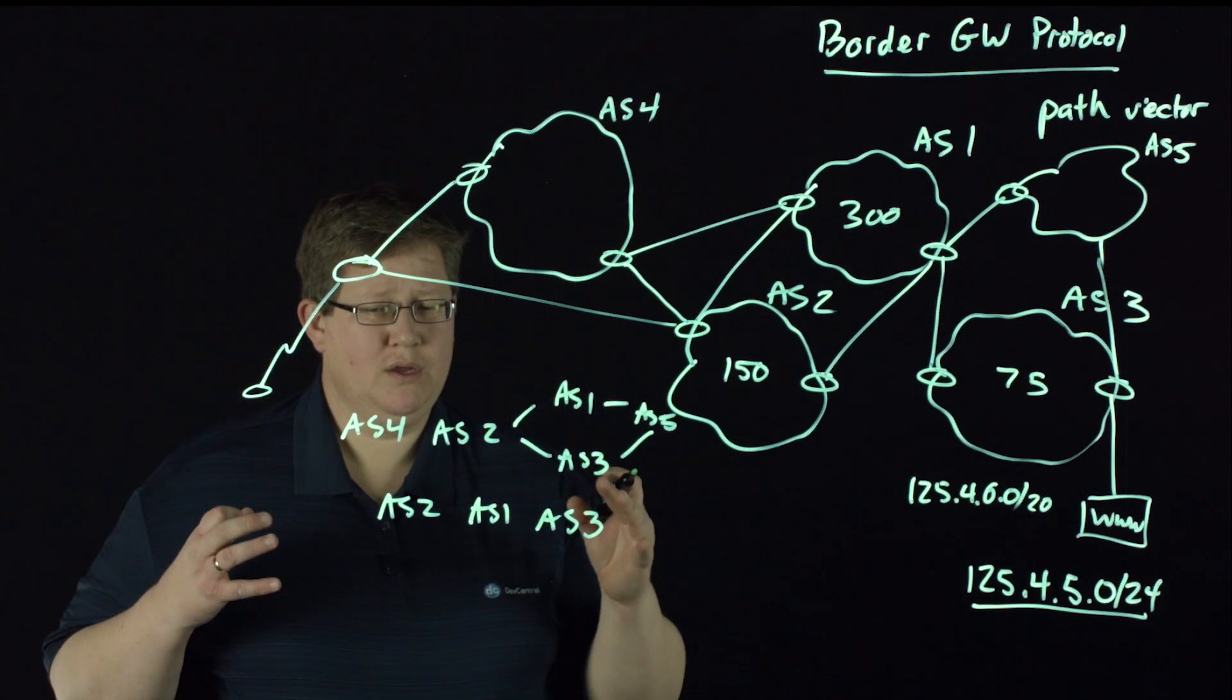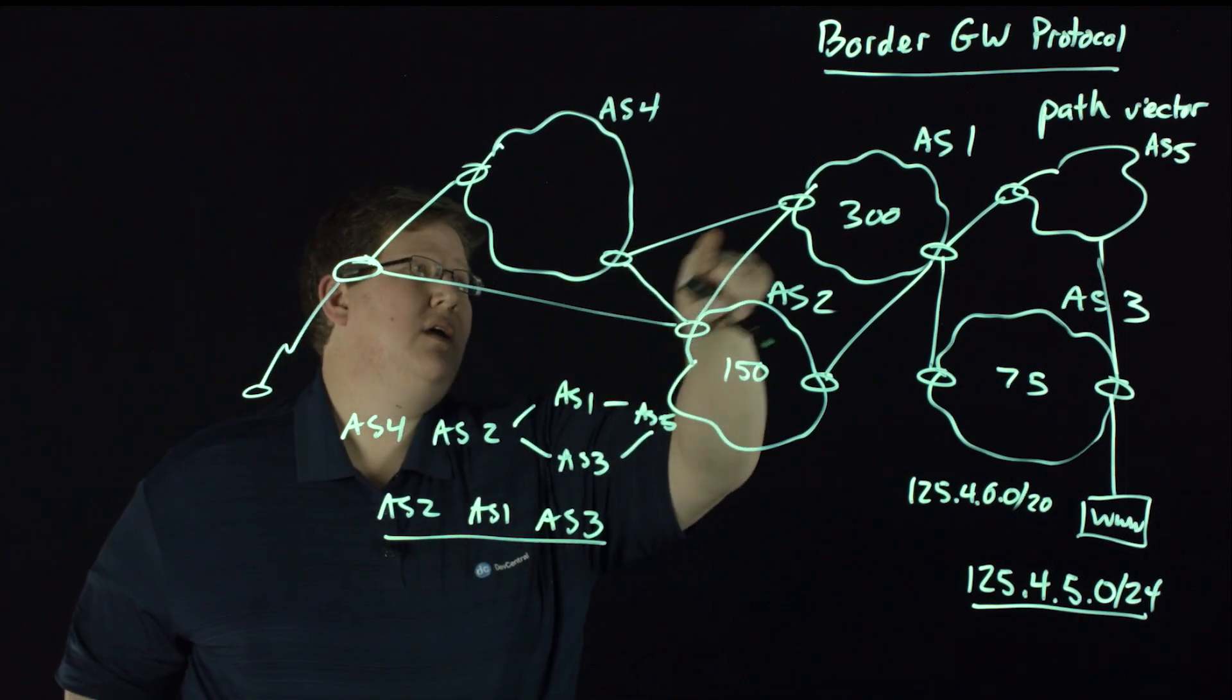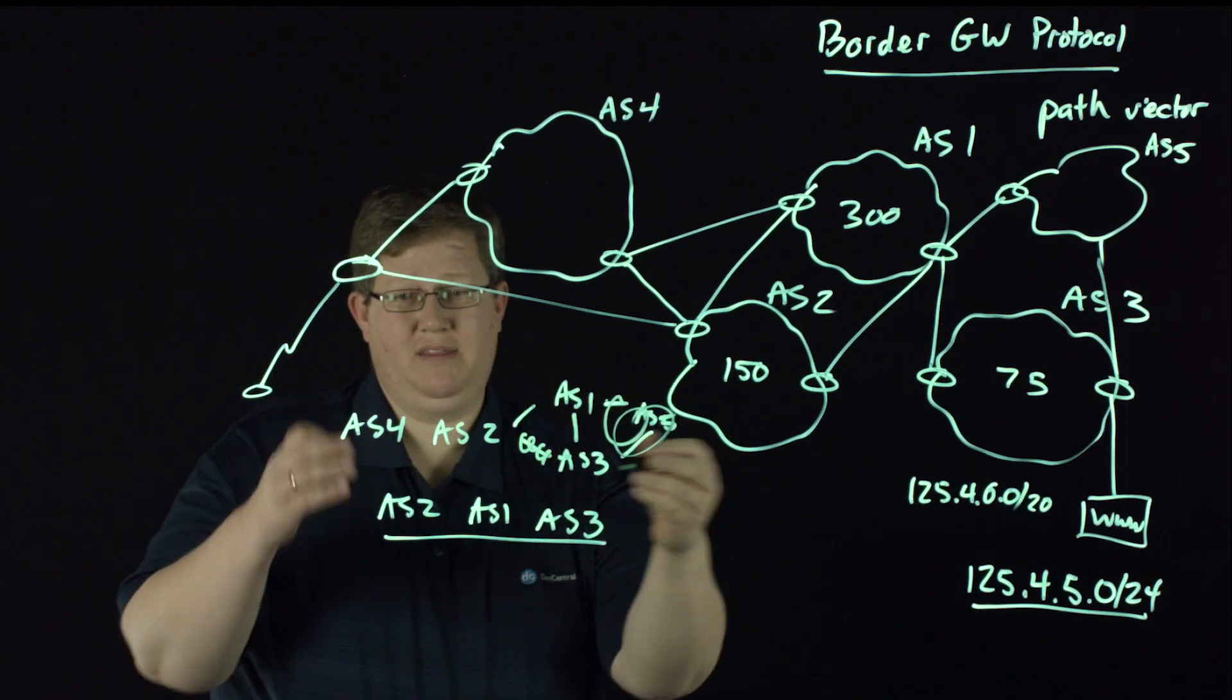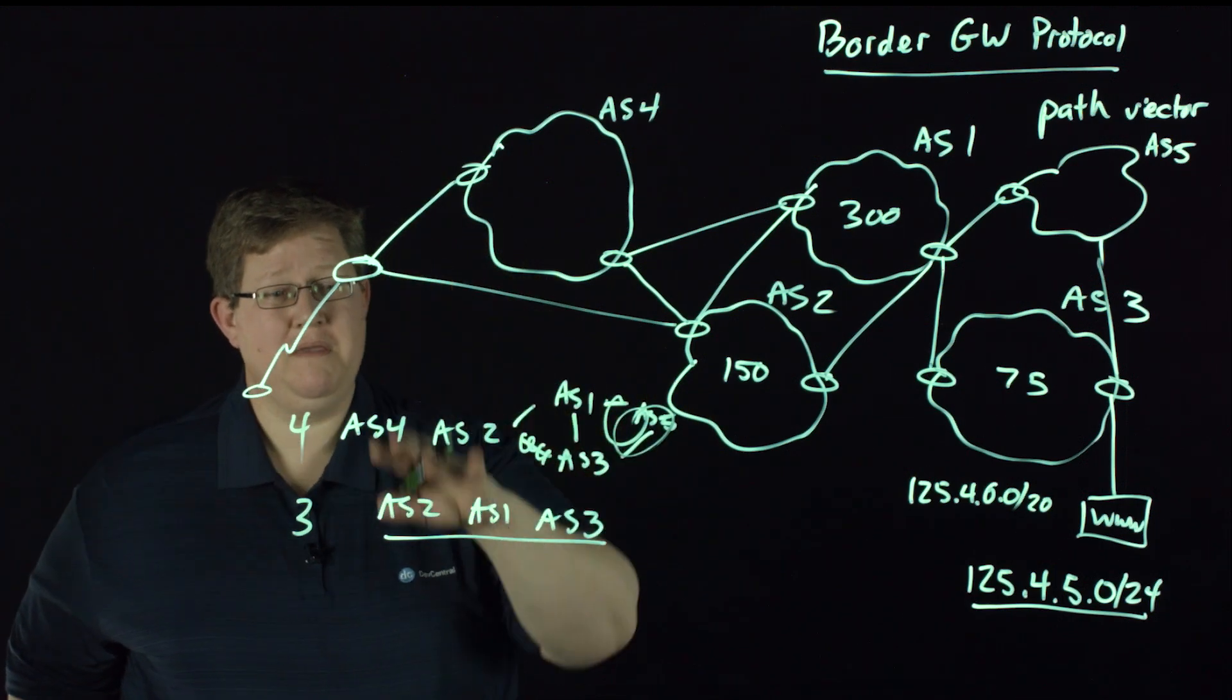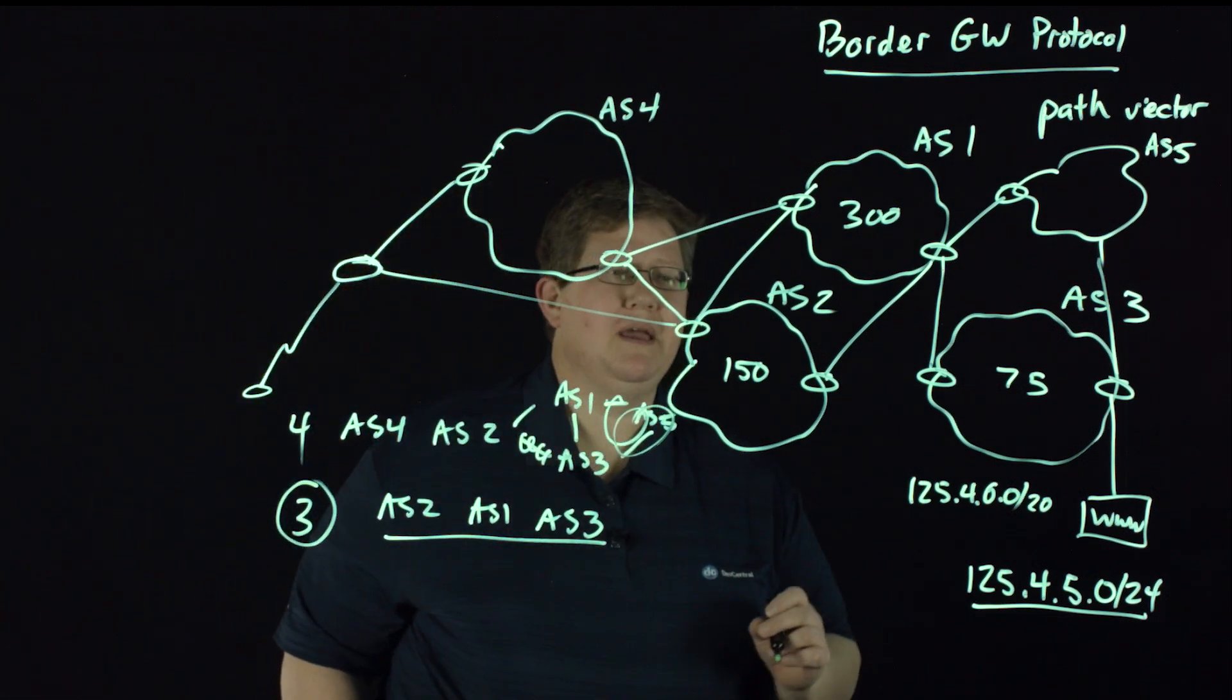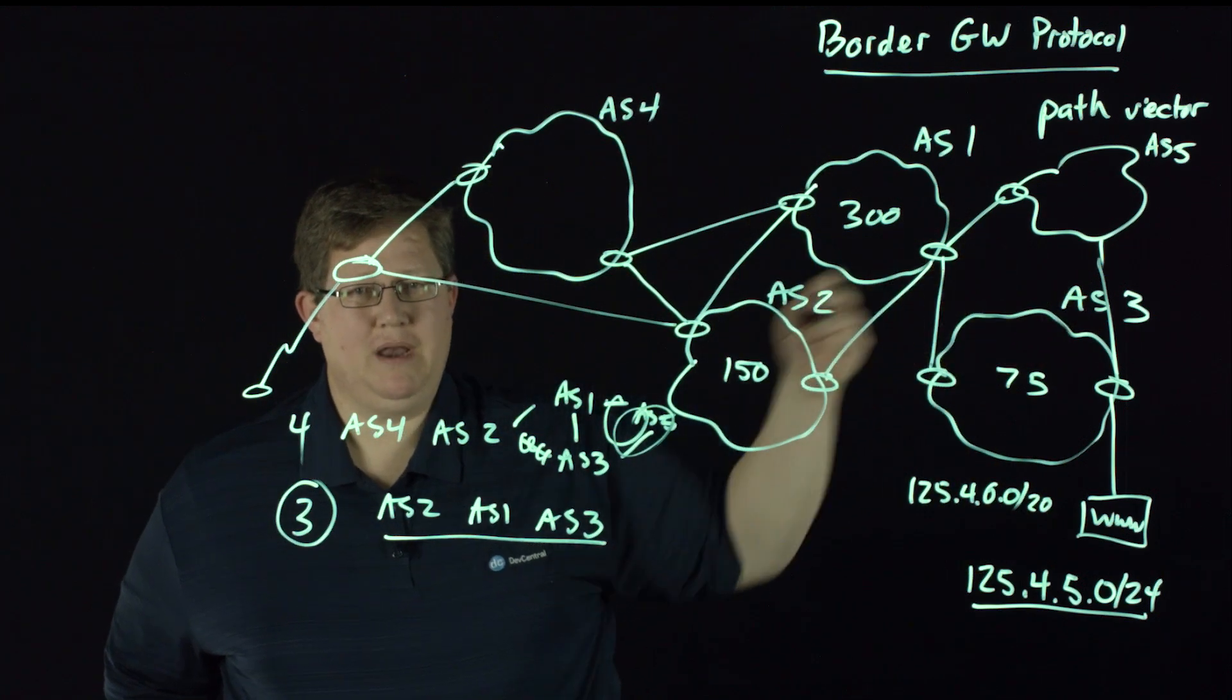So if I pick one, say that my path is AS2, AS1, AS3, this one, and then the other one, let's say, was AS4 to AS2 to AS1 to AS3. And we'll just kill that route and kill this one. So my path length is four here and my path length is three. So if I don't have other local weights or local preferences impacting the difference between these two, then the shortest path is going to win. And that's the path that I'm going to take.